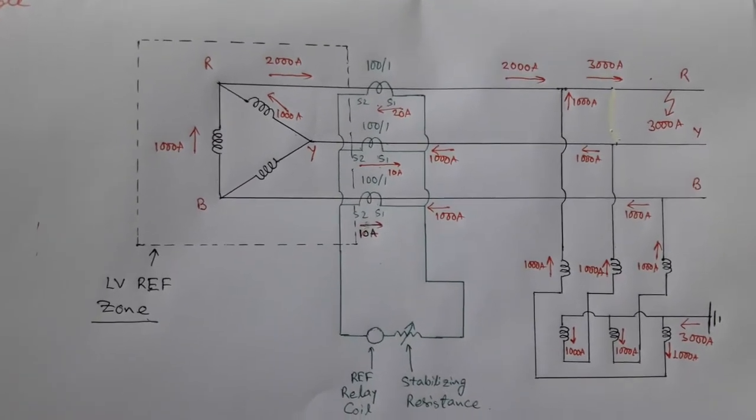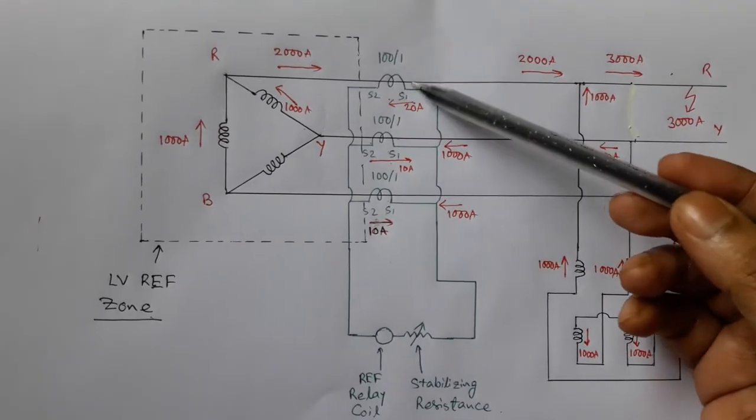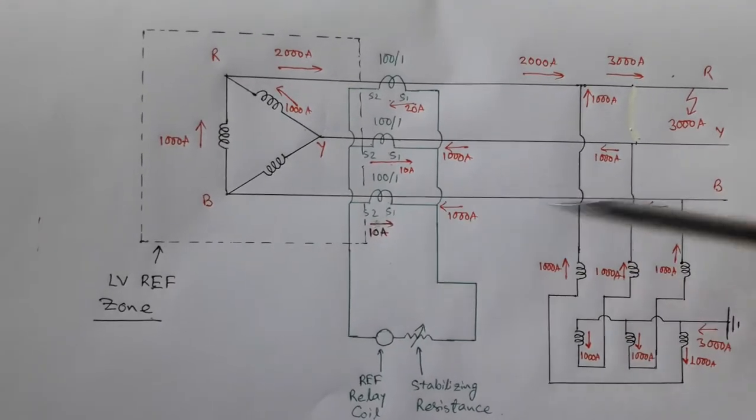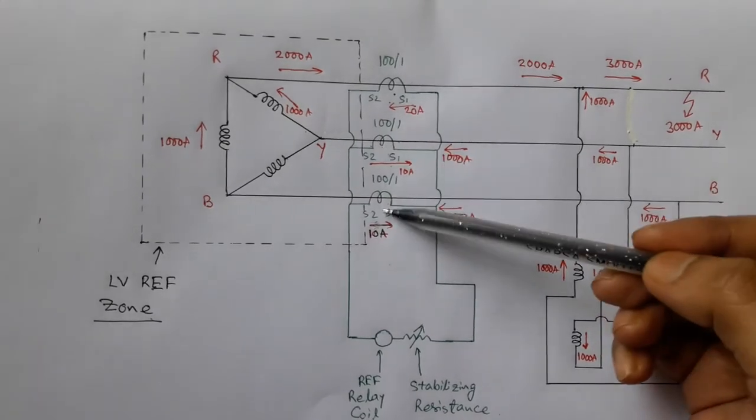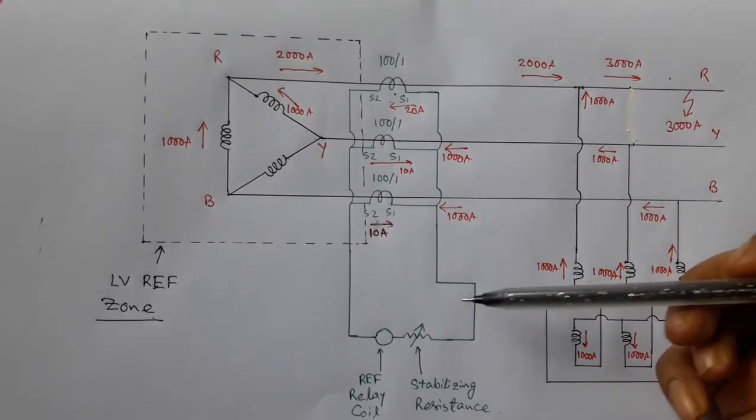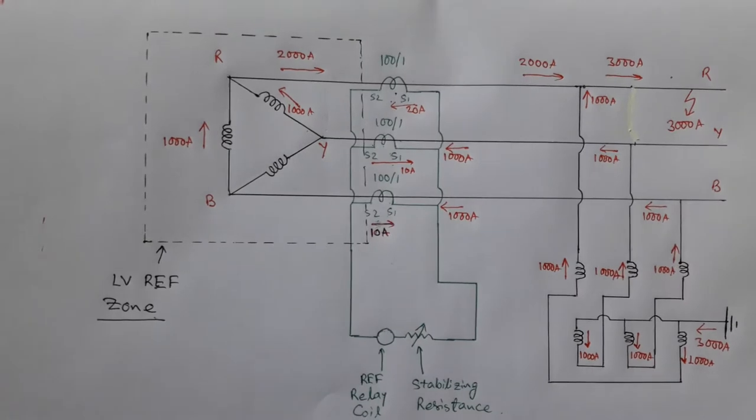In restricted earth fault protection, this zone is created by a set of CTs, and these CTs are connected in parallel to create this restricted earth fault zone.